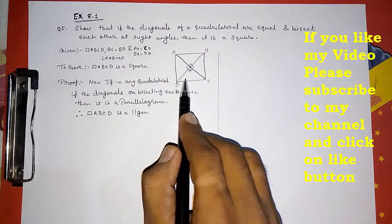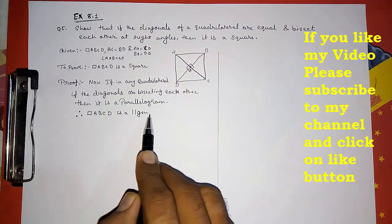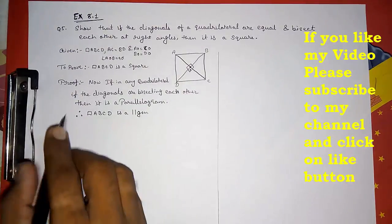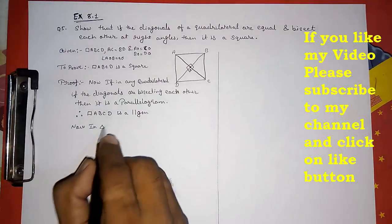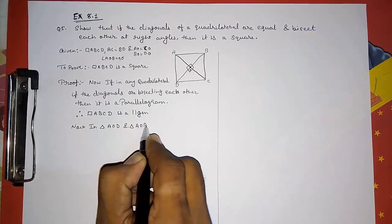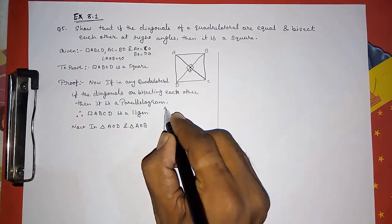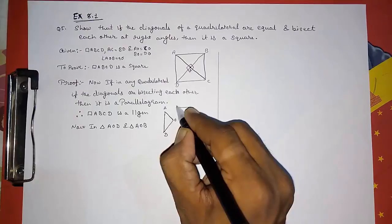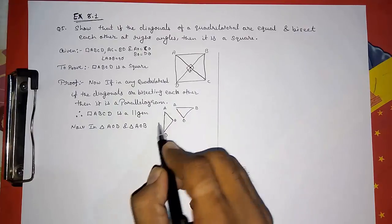In a parallelogram, opposite sides are equal, so it will be easy for us to prove that all sides are equal. If we prove that adjacent sides are also equal, then we can say all sides are equal. So now consider triangle AOD and triangle AOB. I am drawing these two triangles so that you can see them — AOD and AOB. With the help of these two triangles, I am going to prove these two sides equal.